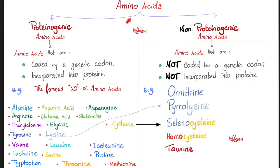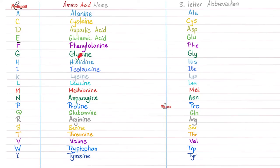How many amino acids do we have? How many proteogenic amino acids exist in the human body? Only 20. How about the non-proteogenic? The non-proteogenic are many. These are the 20 proteogenic amino acids, each one with a name, one-letter abbreviation, and three-letter abbreviation. Today, we want to focus on phenylalanine and tyrosine.